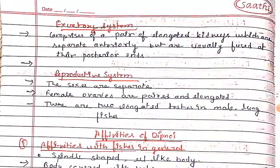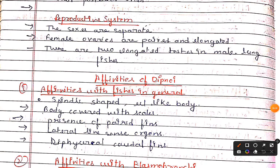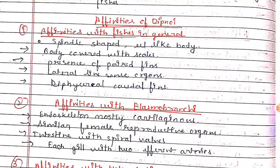The excretory system has a pair of kidneys which are separate anteriorly but usually fused at their posterior end. In the reproductive system, sexes are separate. Female ovaries are paired and elongated. There are two elongated testes in male lung fishes.